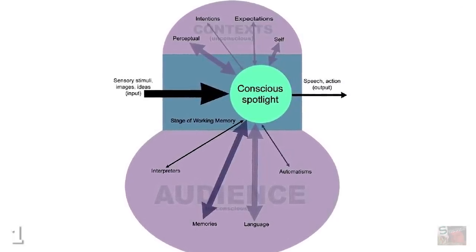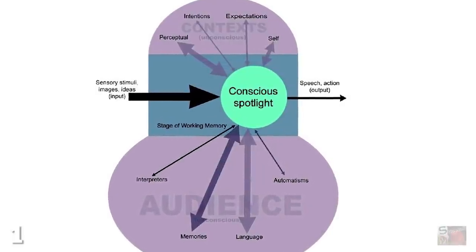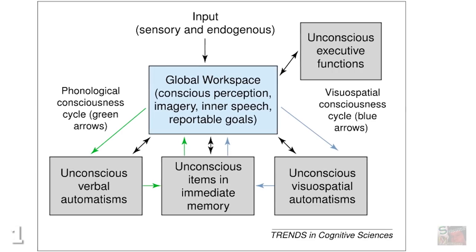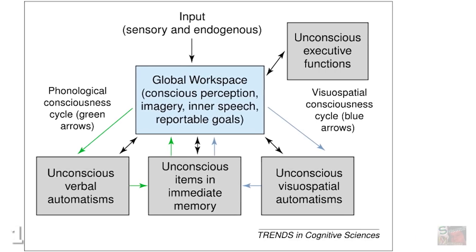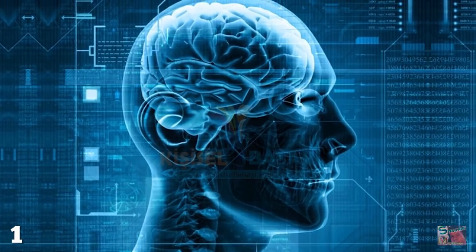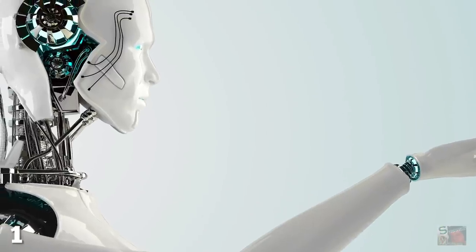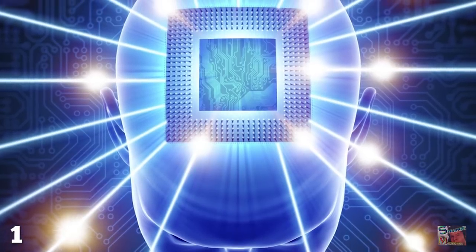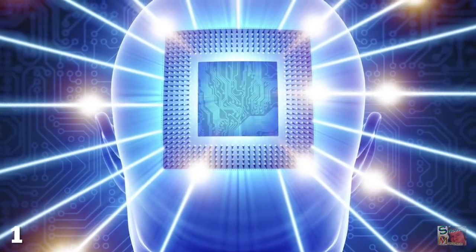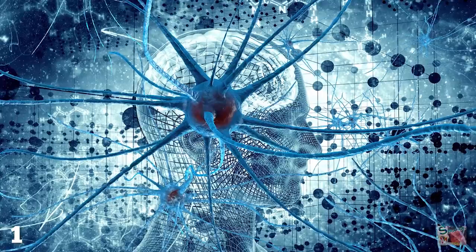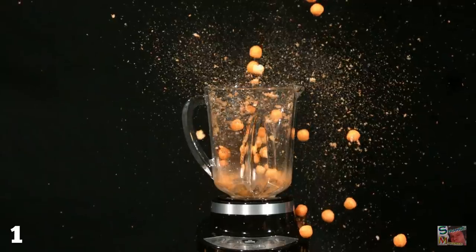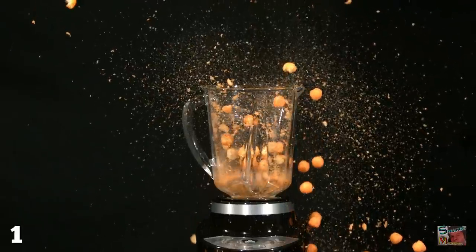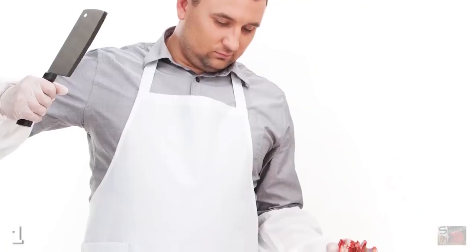And at number one: the Global Workspace. Another neuroscientific theory regarding consciousness is called the Global Workspace, and if this one is accurate, then artificial awareness may be more possible than we thought. The theory claims consciousness acts like computer memory, retaining and recalling information at will.